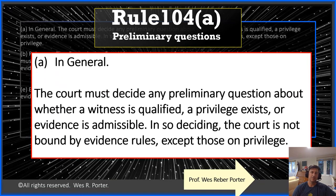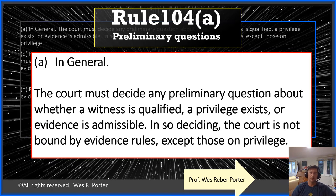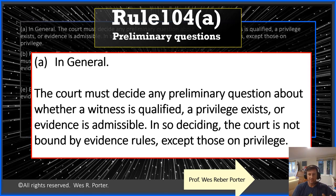Let's talk about 104(A). This is a very important part of the rules because it goes to the process of what happens during objections and what the court can do. The court can decide a preliminary question about whether a witness is qualified — that's a legal determination the court makes before the witness even testifies, which we'll cover when we discuss Article 7 and experts. Whether a privilege exists is also a legal determination the court makes, often before trial. These challenges involve privilege logs and arguments decided before we get to trial.